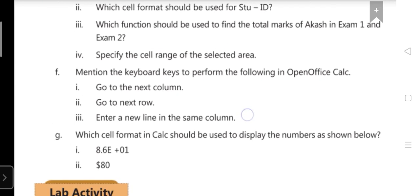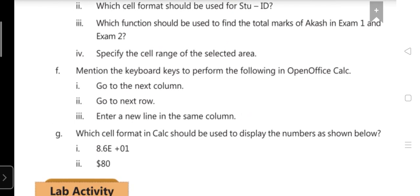F, first: go to the next column. Which keyboard key is used to go to the next column? Answer is tab. Tab key.